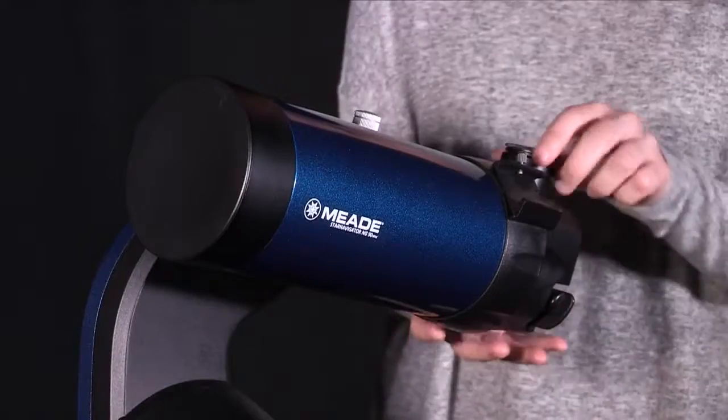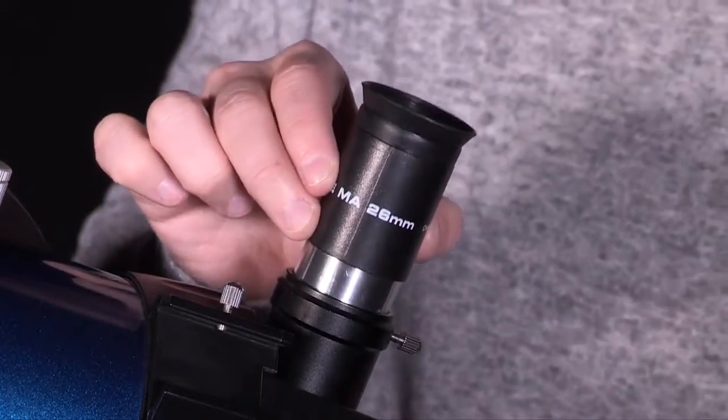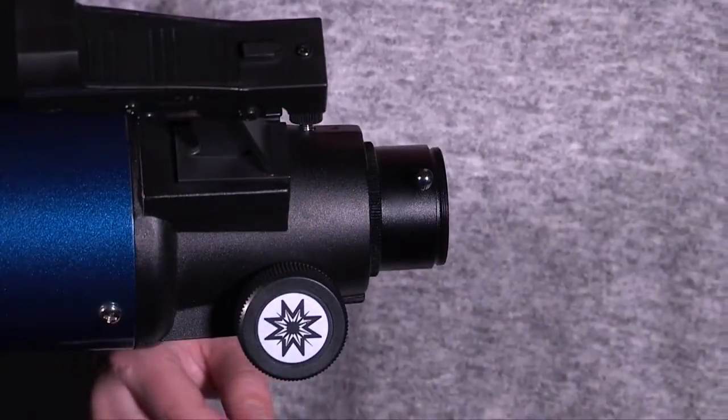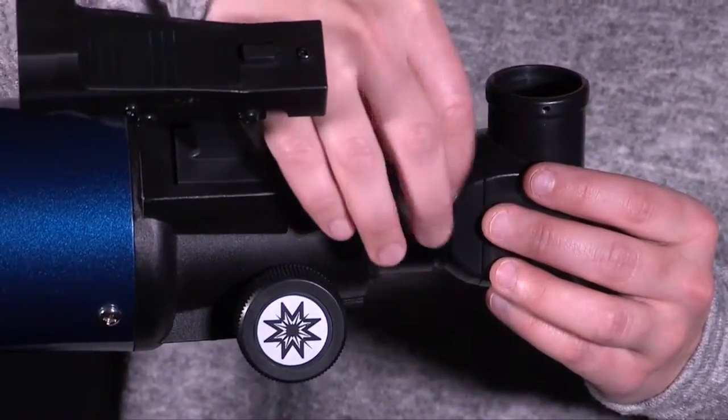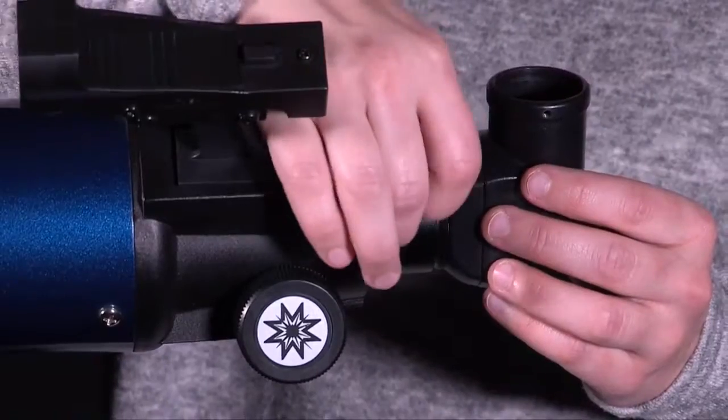Next, pull out the plastic dust cover from the eyepiece holder. For refractors only, slide the tube of the supplied erect image prism into the telescope's eyepiece holder and tighten the thumb screws to a firm feel only to secure.